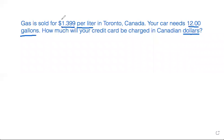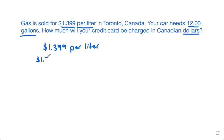When it says gas is sold for $1.399 per liter, that means it costs $1.399 and that is equal to one liter of gasoline. When it uses that word 'per,' that means it's giving you a conversion factor. We're going to use this conversion factor in the problem.